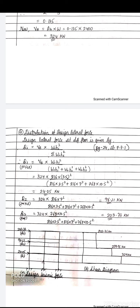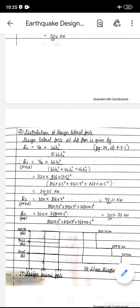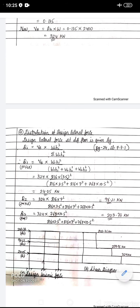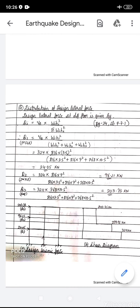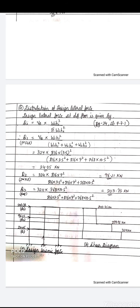For the second floor: Q2 = 324 × (816 × 7²) / (same denominator) = 96.21 kN. For the roof (third floor): Q3 = 324 × (768 × 10.5²) / (same denominator) = 203.73 kN.